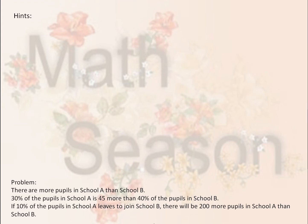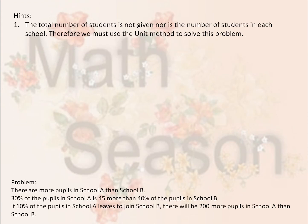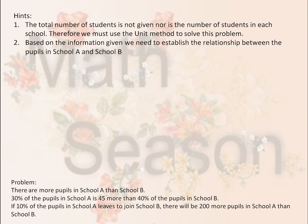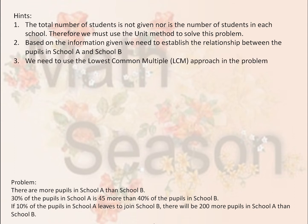A few hints. The total number of students is not given, nor is the number of students in each school. Therefore, we must use the unit method to solve this problem. Based on the information given, we need to establish the relationship between the pupils in School A and School B. We need to use the lowest common multiple approach to solve this problem.